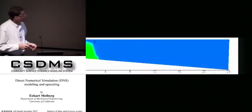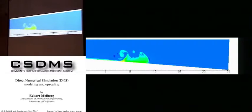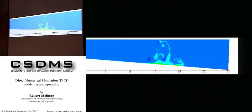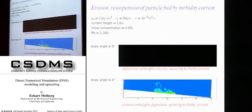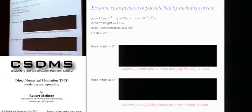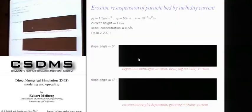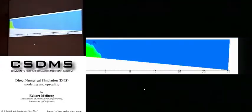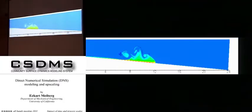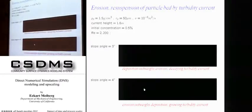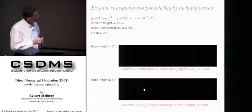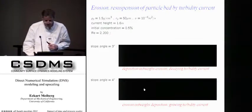If we can derive such continuum models, then we can do simulations where erosion is just a function of the bottom wall shear stress. Here are two simulations: one for a slope angle of three degrees, where erosion is weaker than deposition so the flow dies, and one for four degrees, where erosion has become stronger than deposition. In that case, the amount of suspended sediment grows, we have an avalanche-like effect, the current accelerates, and grows in magnitude.